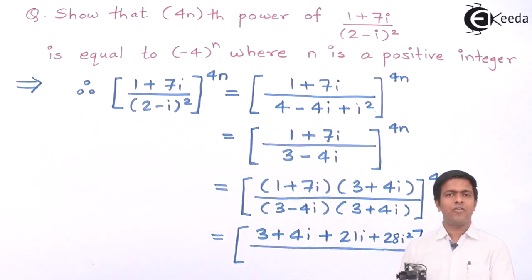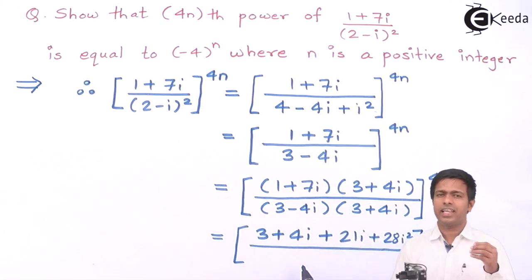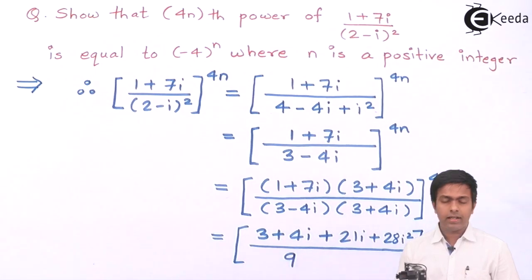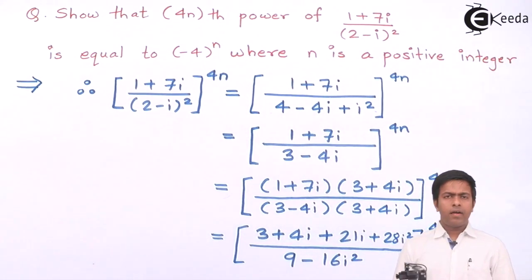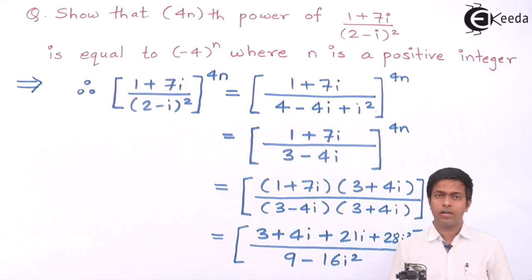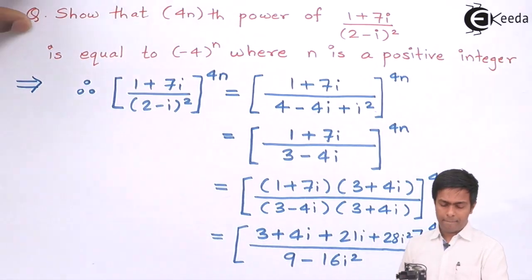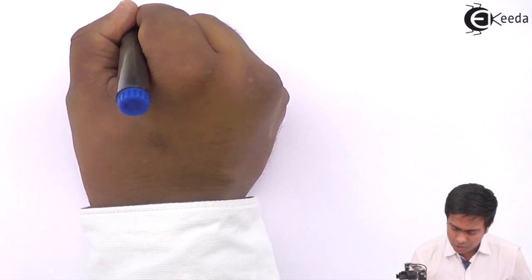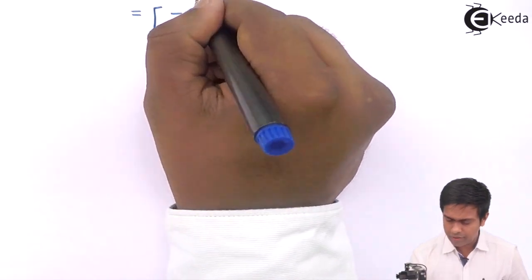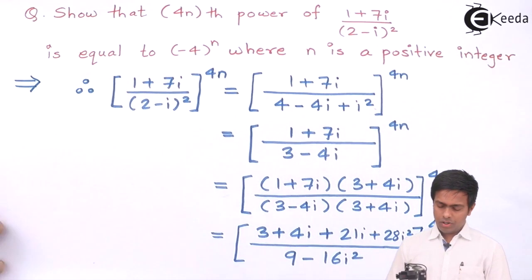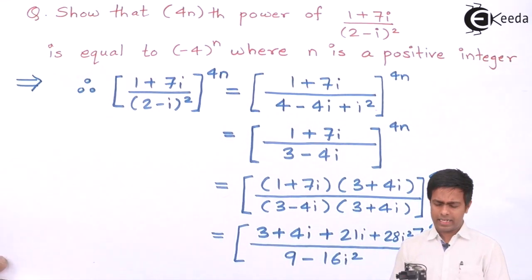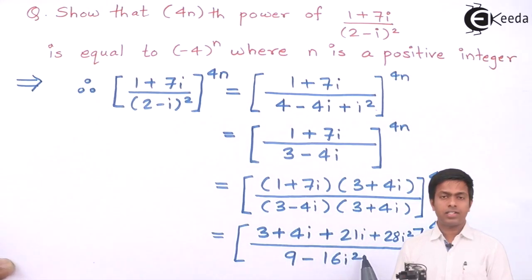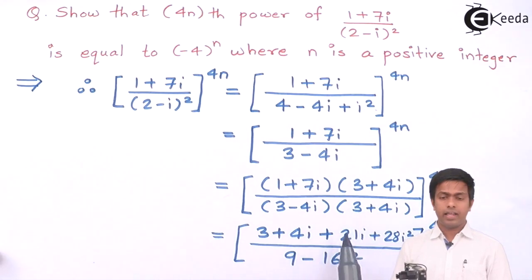In the denominator we apply the formula (a - b)(a + b) = a² - b², giving 9 - 16i². Since i² = -1, that becomes 9 + 16 = 25. In the numerator, combining real parts gives -28 + 3 = -25, and the imaginary terms give 4i + 21i = 25i. So the numerator is -25 + 25i.